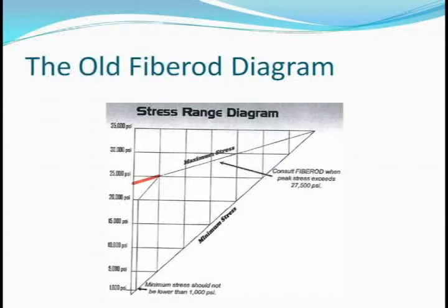This led to the diagram put out by Fiber Rod. Fiber-com was the company; Fiber Rod was the product. The Fiber Rod diagram is really the second evolution of the diagram, which again reflected some product changes. It was intended to allow the customer to use the entire diagram — the top part was not cut off. But there was still a warning that said if you exceed 27,500 PSI, contact us. This was done to prevent some designs getting out that had very little chance of working.